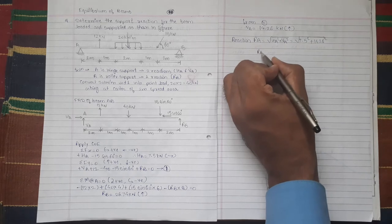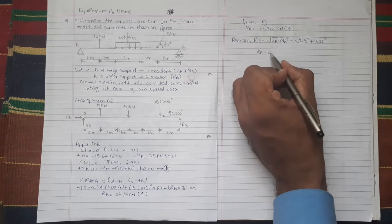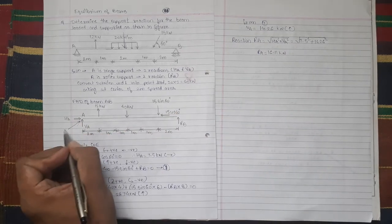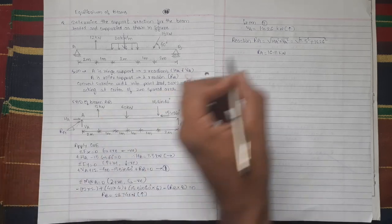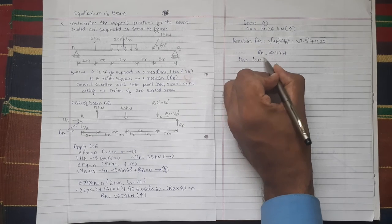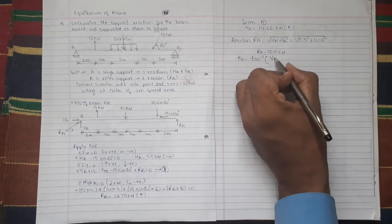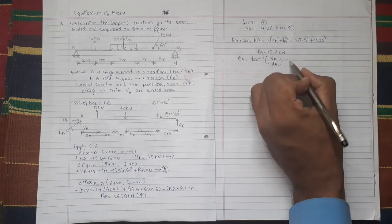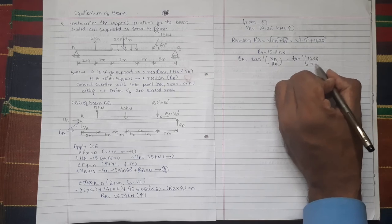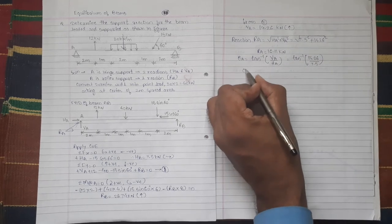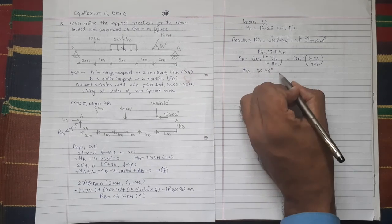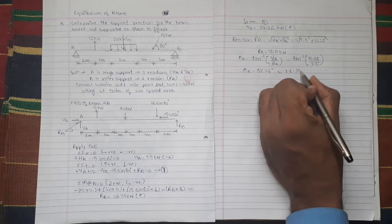We get value of RA which is equal to 16.11 kN. We want to know what is angle made by this final RA with respect to horizontal. So θA is angle made by RA with respect to horizontal. θA is taken equal to tan inverse VA upon HA. So here tan inverse, VA value is 14.26 kN, HA value is 7.5 kN. We get value of θA which is equal to 62.26 degree with respect to horizontal.